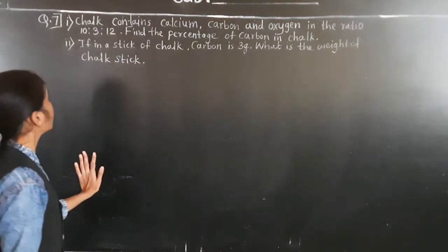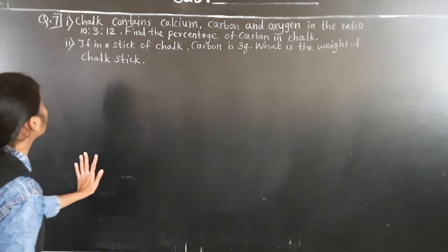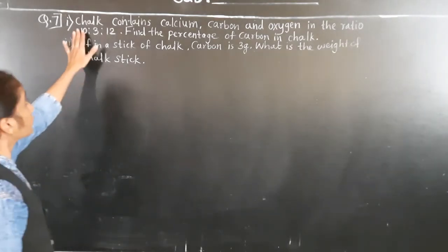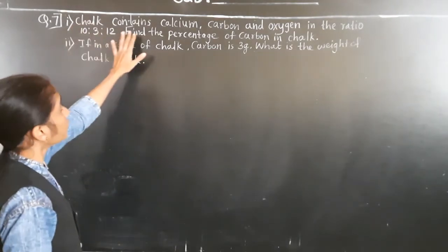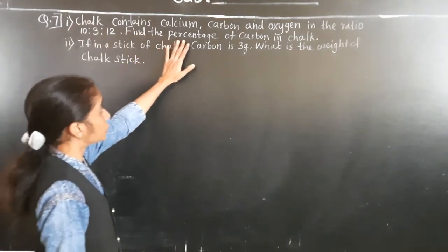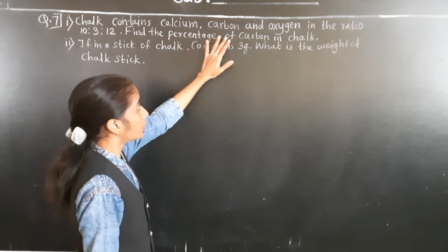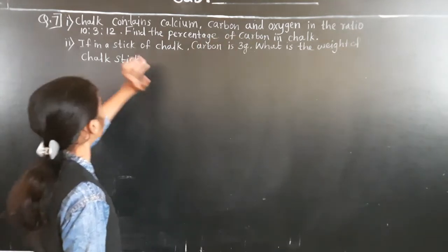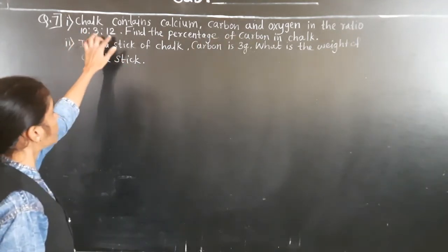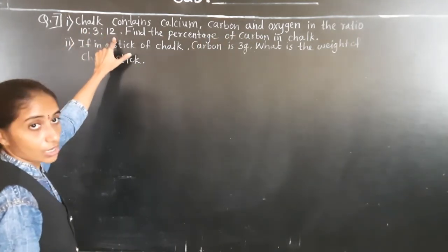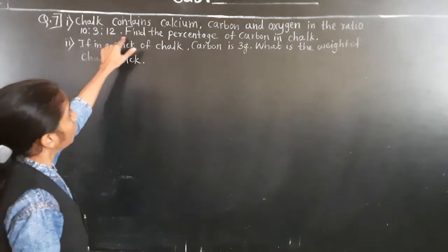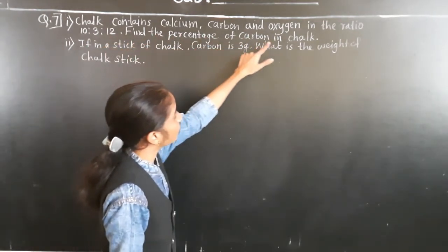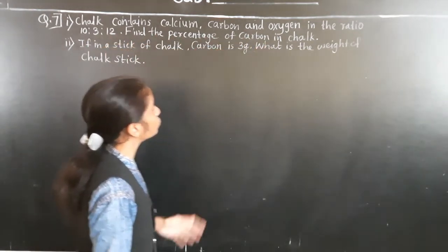Let's solve question number 7. In the first part, chalk contains calcium, carbon, and oxygen in the ratio 10 is to 3 is to 12. Find the percentage of carbon in a chalk.